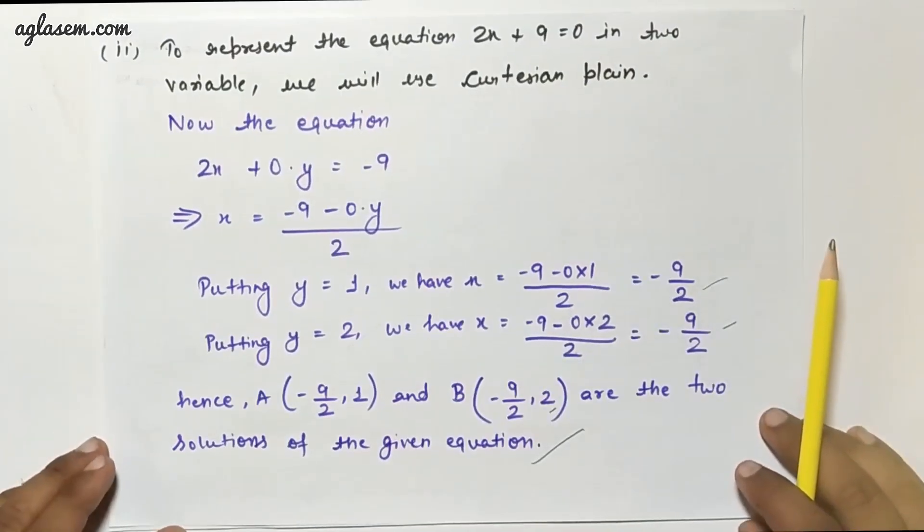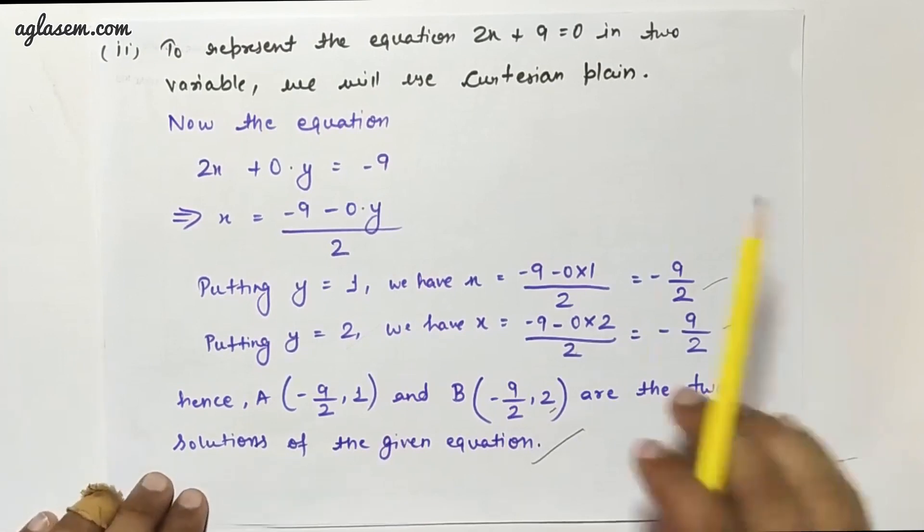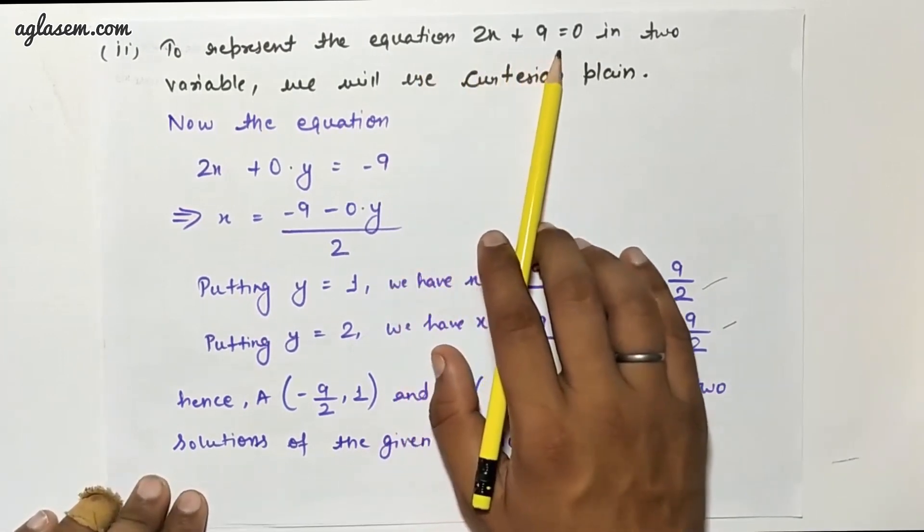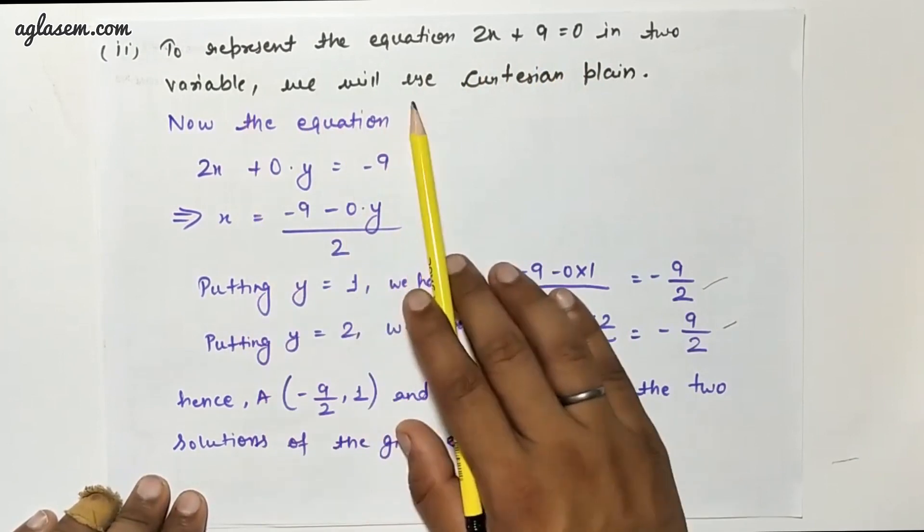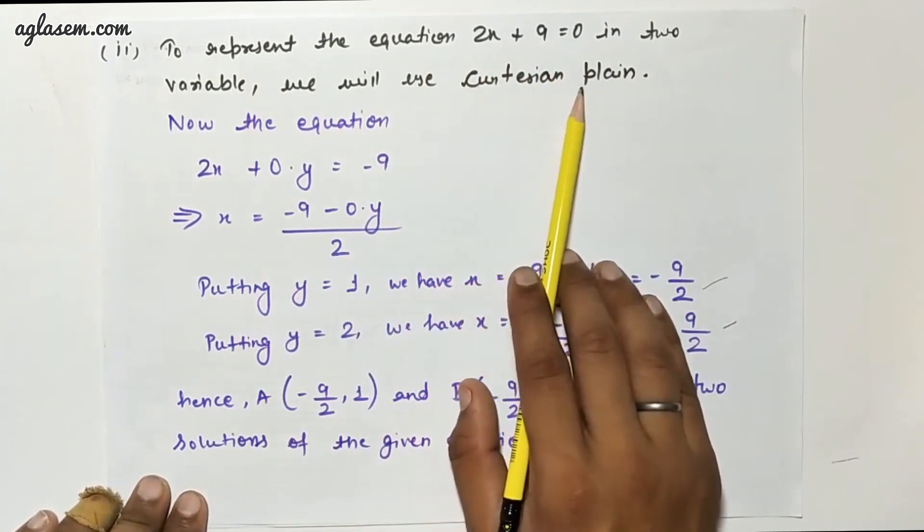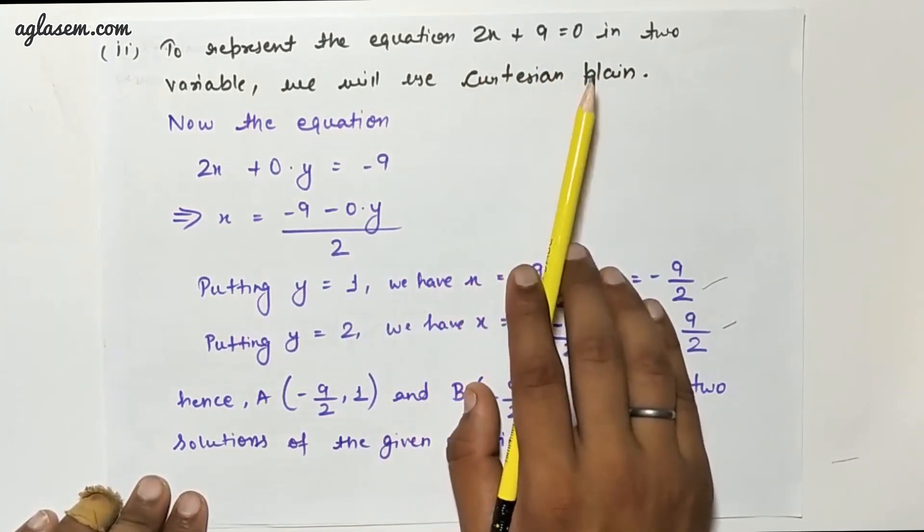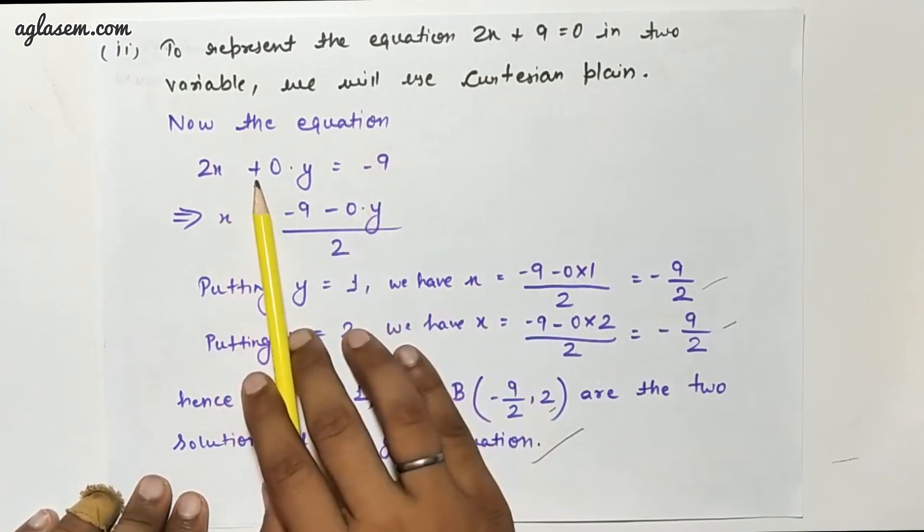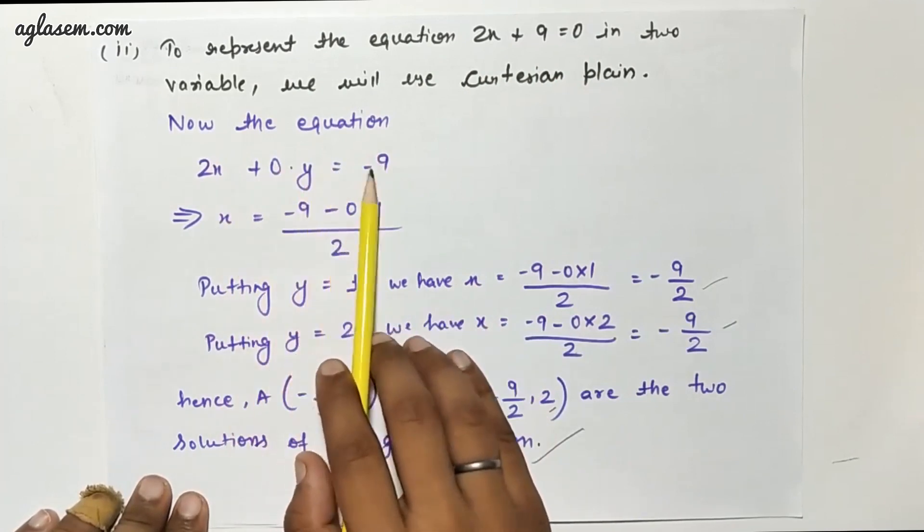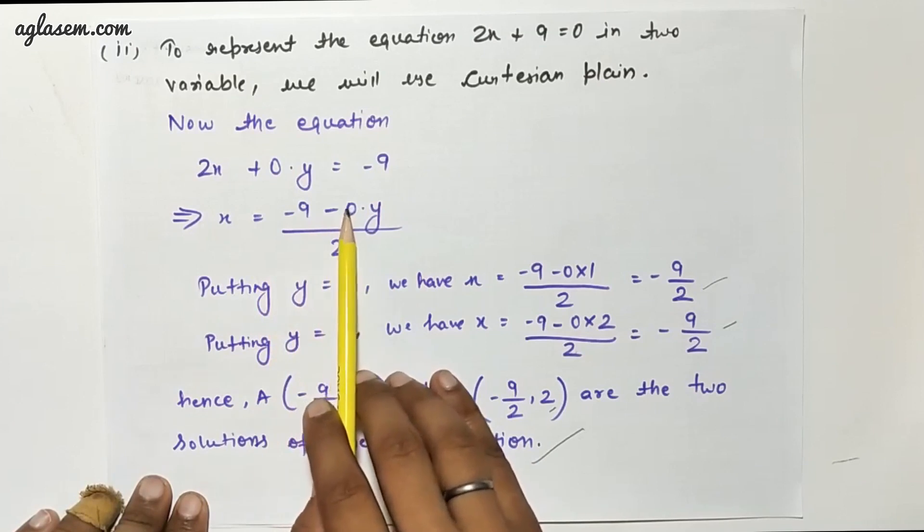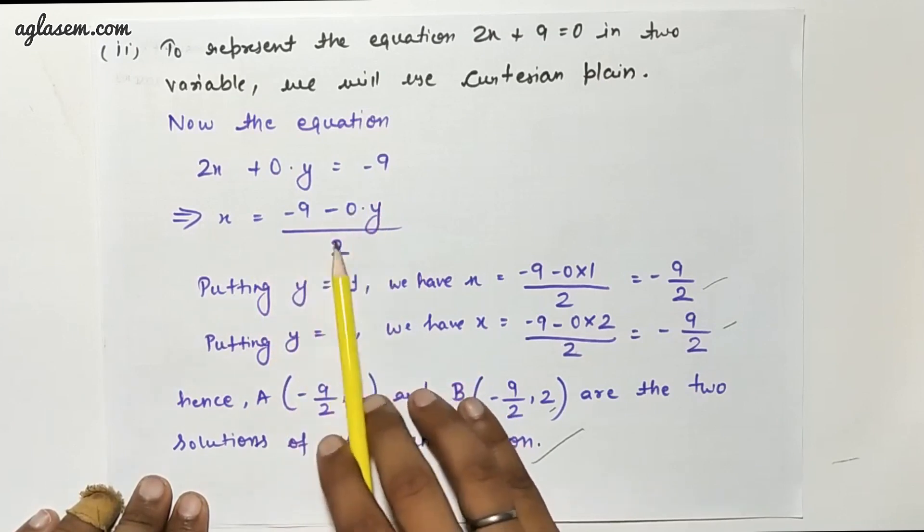Now for the second part in two variables: to represent the equation 2x plus 9 equals 0 in two variables, we will use the Cartesian plane as in Question 1. The equation will be 2x plus 0y equals minus 9. So x equals minus 9 minus 0y upon 2.